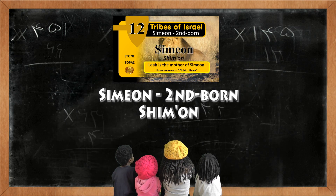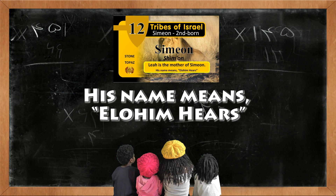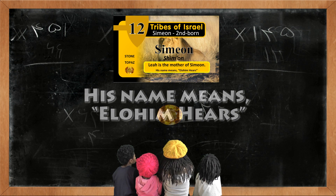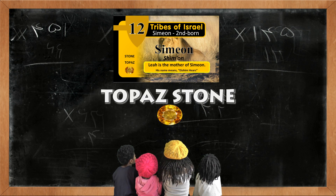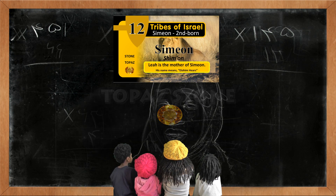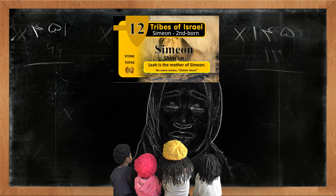Simeon is the secondborn son. His name means Elohim hears. The Topaz stone represents his tribe. Leah is the mother of Simeon.